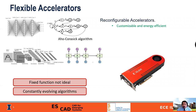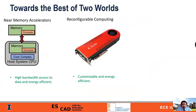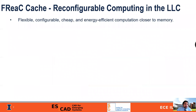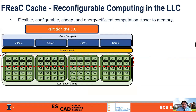This is what makes reconfigurable accelerators so attractive. However, their area makes them difficult to integrate in memory. So in this work, we try and answer the question: can we have the best of both worlds? And our solution is FreeCache. We provide flexible, configurable, cheap, and energy efficient computation closer to memory.